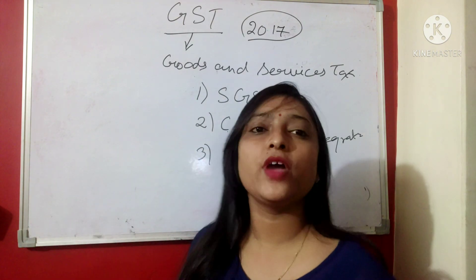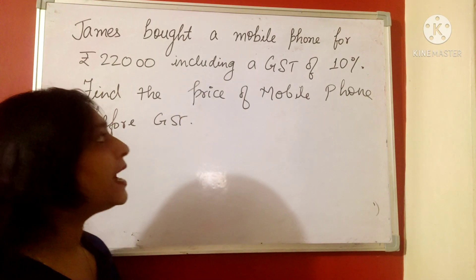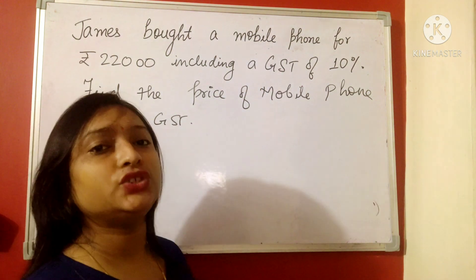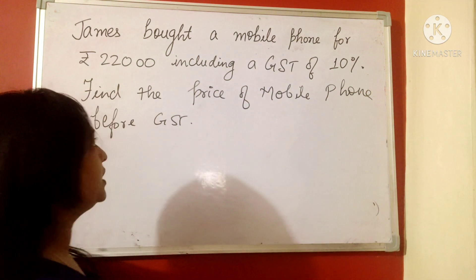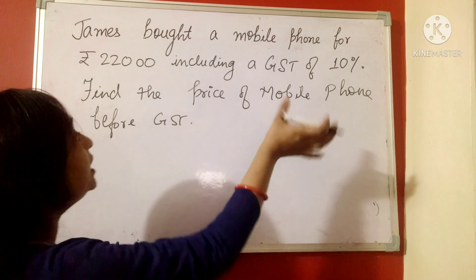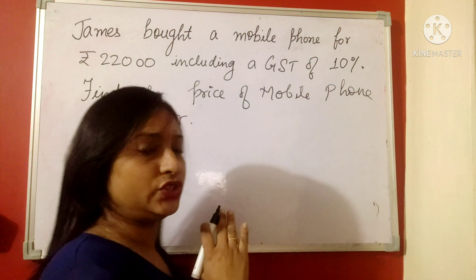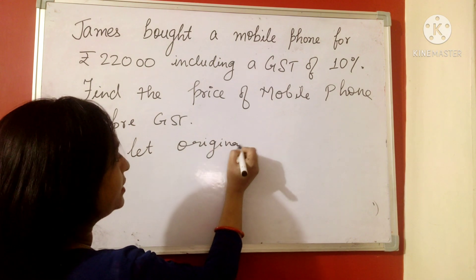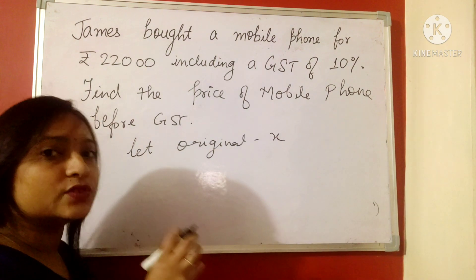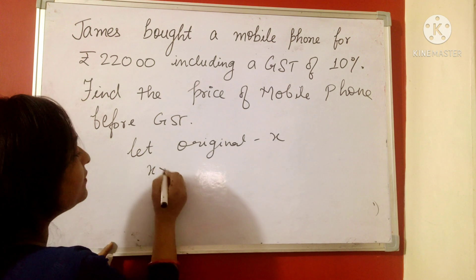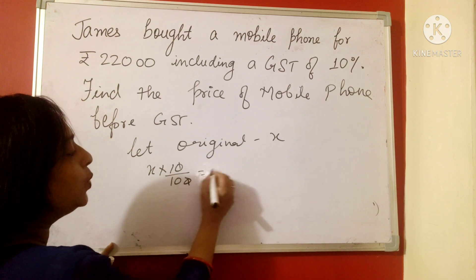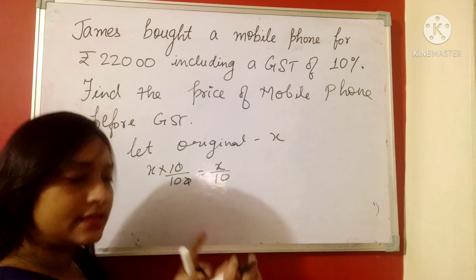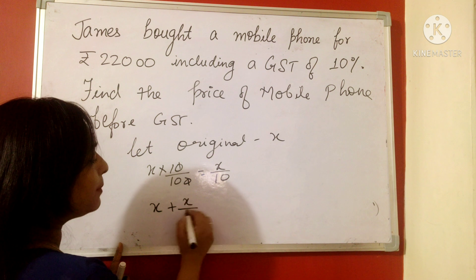Let us understand that with the help of a question. James bought a mobile phone for rupees 22,000 including a GST of 10 percent. We have to find out the original price before the GST. So let the original amount be x. On rupees x we have applied 10 percent GST, which equals x divided by 10.